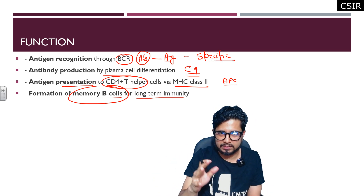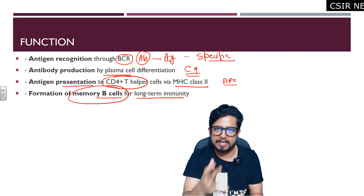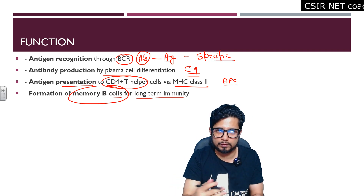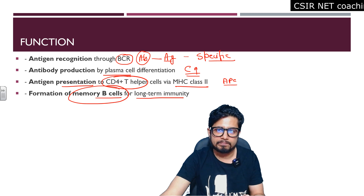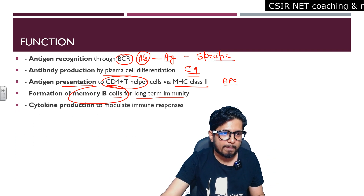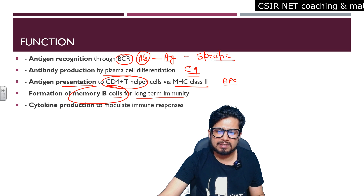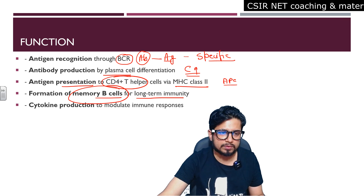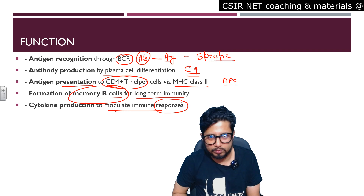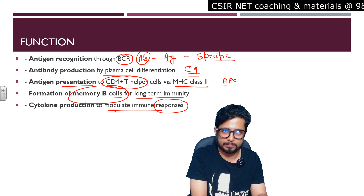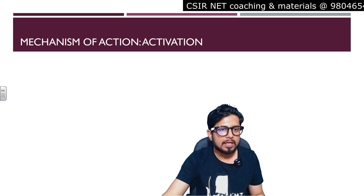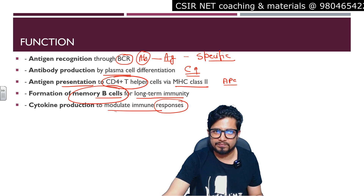Once memory B cells are formed, long-term immunity can be maintained. When a B cell is matched with a particular antibody to fight an antigen, that information is stored so that if the same antigen attacks again in the future, the immune response can start where it left off. Cytokine production is another secondary function of B cells, modulating immune responses, particularly related to primary and secondary immune responses where different antibodies are involved.